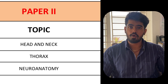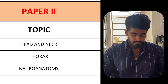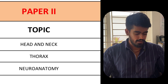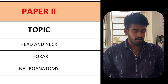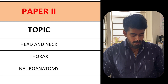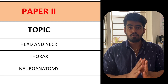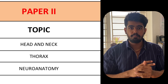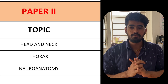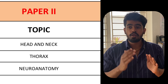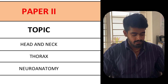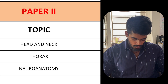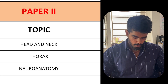Coming to paper 2 — paper 2 includes head and neck, thorax, and neuroanatomy. I feel like paper 2 is usually more easy, because paper 1 topics you study at the start of first year, so you would have forgotten a lot by the time of the exam. But paper 2 you have studied only recently, so it is relatively easier.